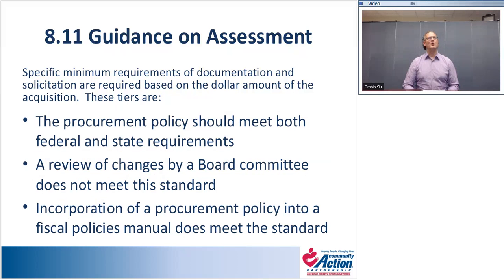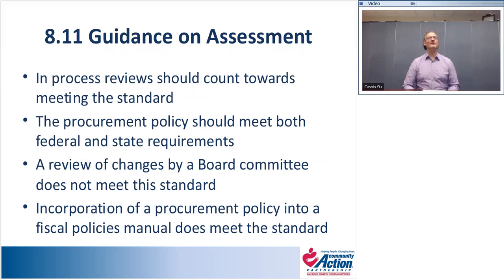This is another example of a standard where your agency might be in compliance with the organizational standard but not with the super circular — which may raise other issues when monitored, as many state lead agencies will conduct regular monitoring in conjunction with monitoring against organizational standards. For Standard 8.11, an in-process review of the policy should still count towards meeting the standard. Your procurement policy should meet both federal and state requirements, and a review of changes by a board committee does not meet the requirement — the full board must review changes.